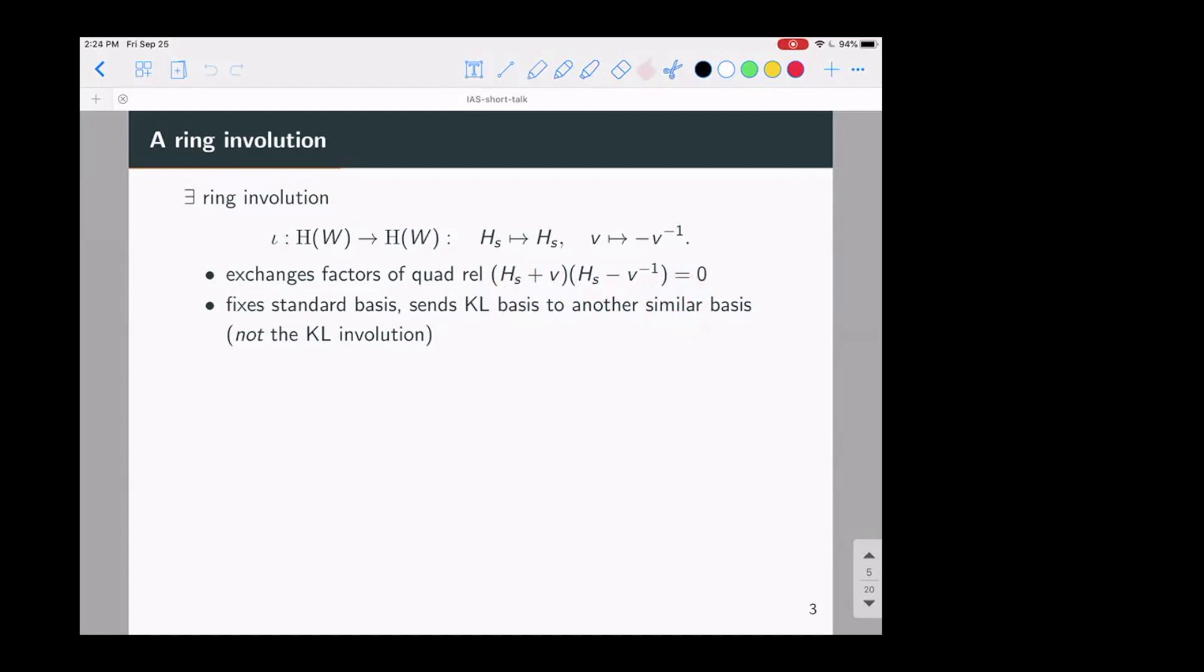This fixes the standard basis, but sends the Kazhdan-Lusztig basis to some similar basis. And one observation is that if you set V is equal to 1, then minus V inverse goes to minus 1. So there is no ring involution of the group ring of the Weyl group that completes this diagram. So one slogan you might say is that this ring involution is giving you some symmetry of the Weyl group that only becomes visible after turning on this deformation. So it's something a little bit subtle.